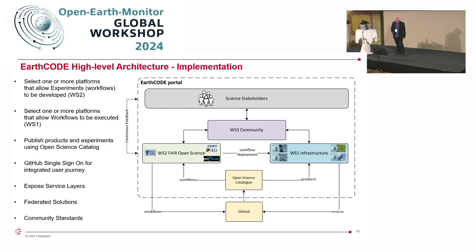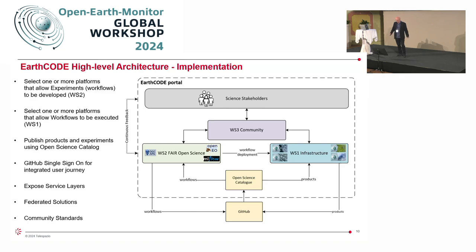Breaking down the high-level architectural implementation of EarthCode: we are currently going through a best practice procurement selecting one or more platforms to implement Workstream 2, and selecting platforms for Workstream 1. Once done, we'll allow those existing platforms to publish experiments to the open science catalogue. We'll use GitHub as a single sign-on mechanism for the integrated user journey, so all the platforms we're selecting will already have GitHub implementation. Once platforms are deployed, we'll start exposing the service layers to allow interoperability, federated solutions, and collaboration between platforms, all supported by community standards.